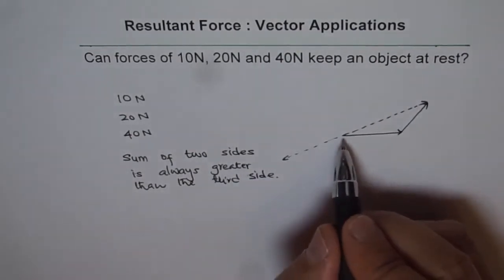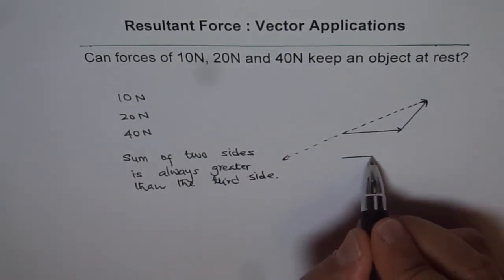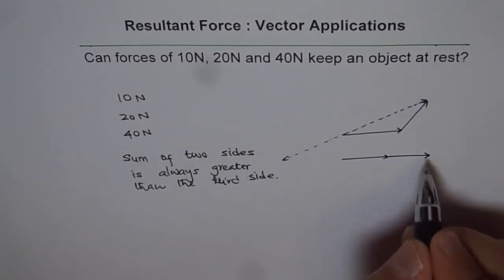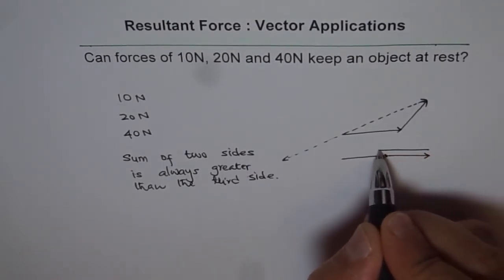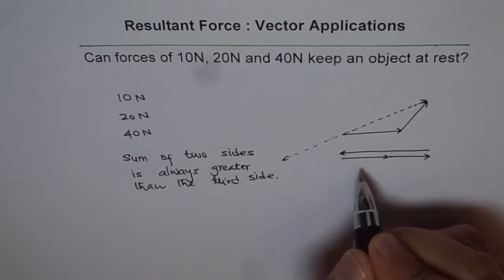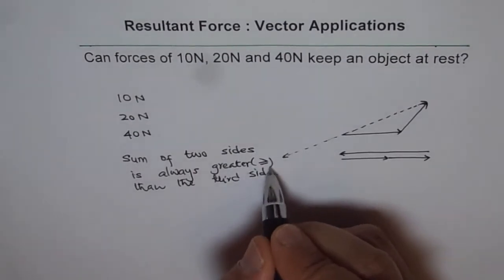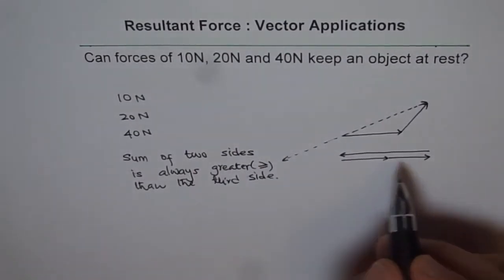Well, if it is a flat thing, if the two forces are collinear and pointed in the same direction, then it should be equal. So we can say greater than or equal to. If it is a flat thing.